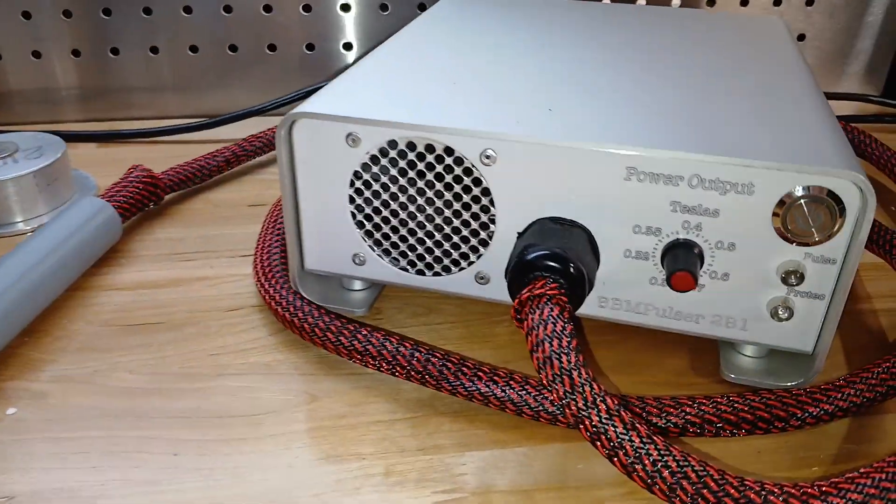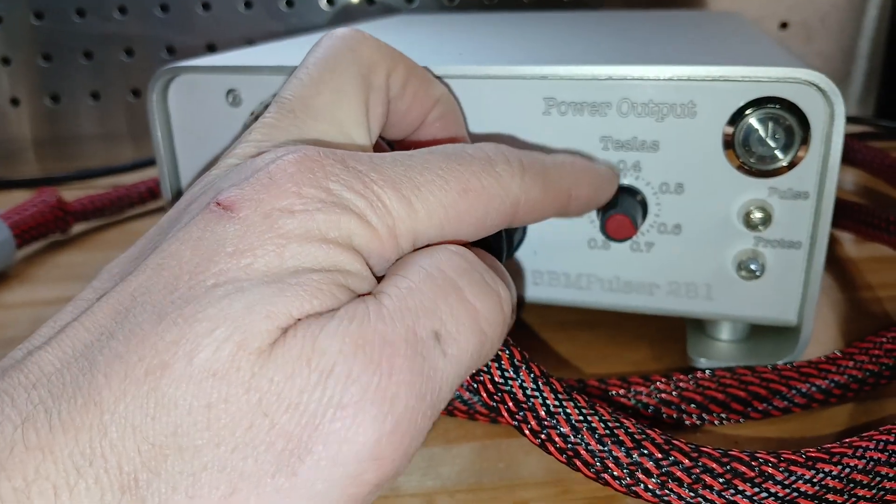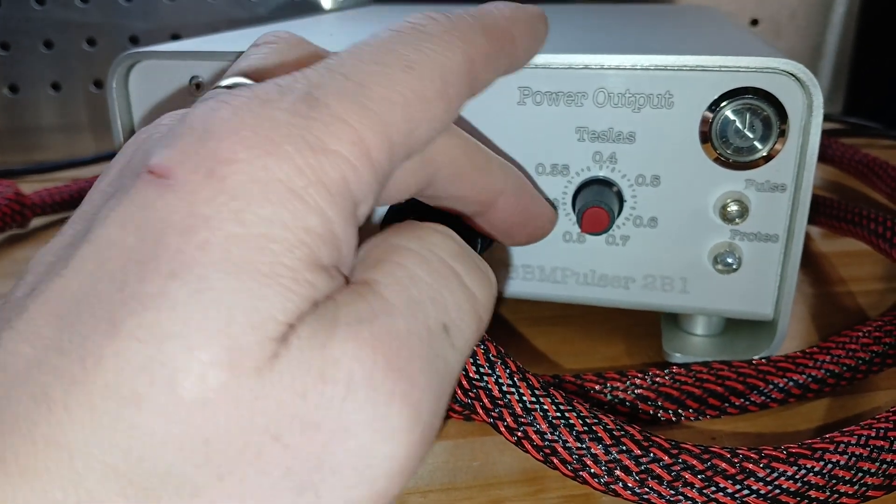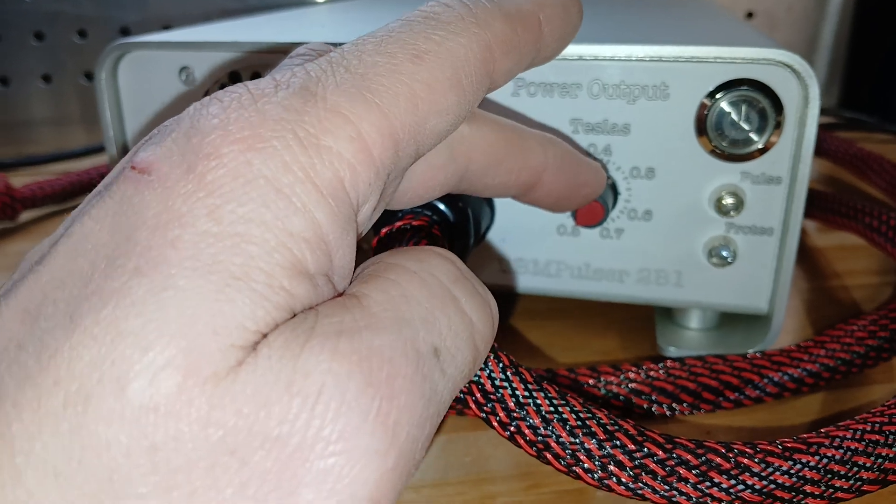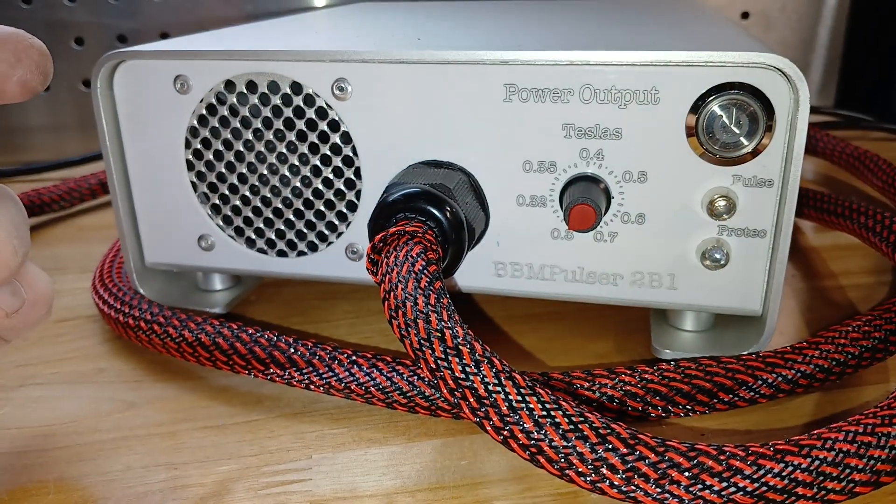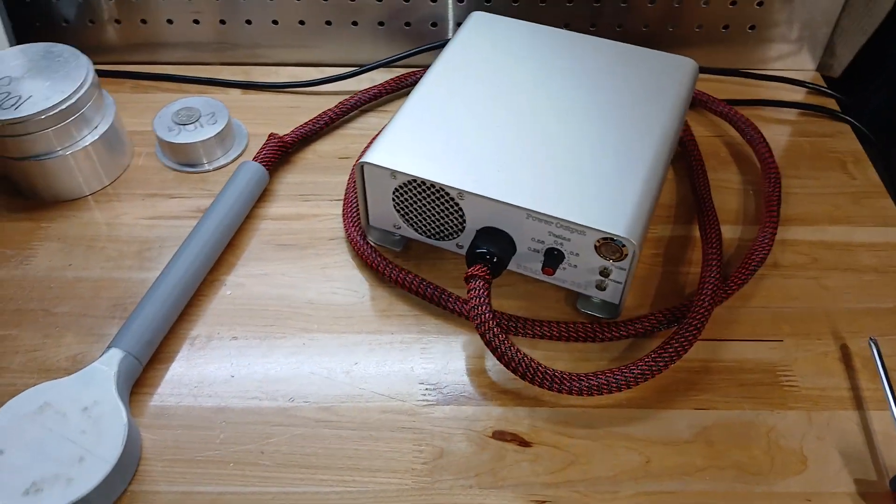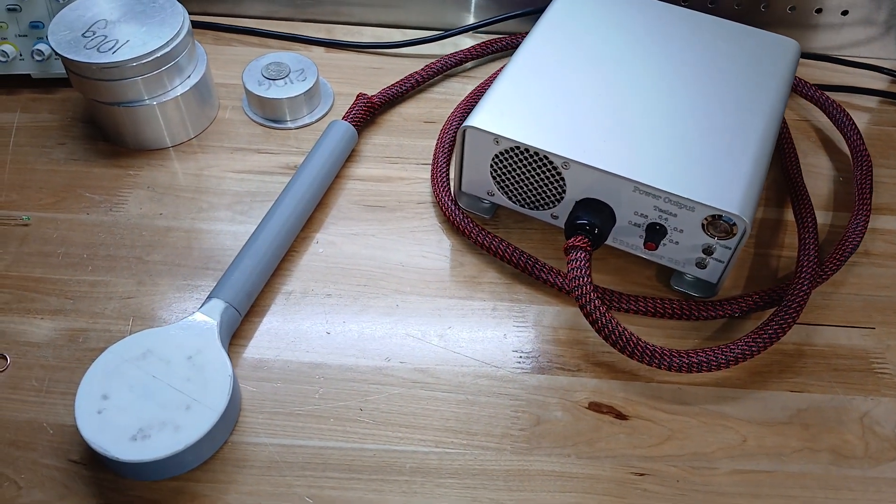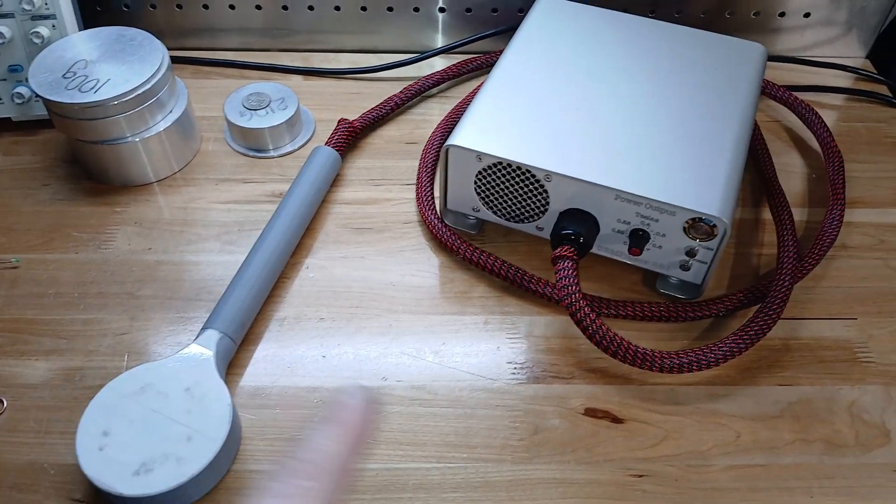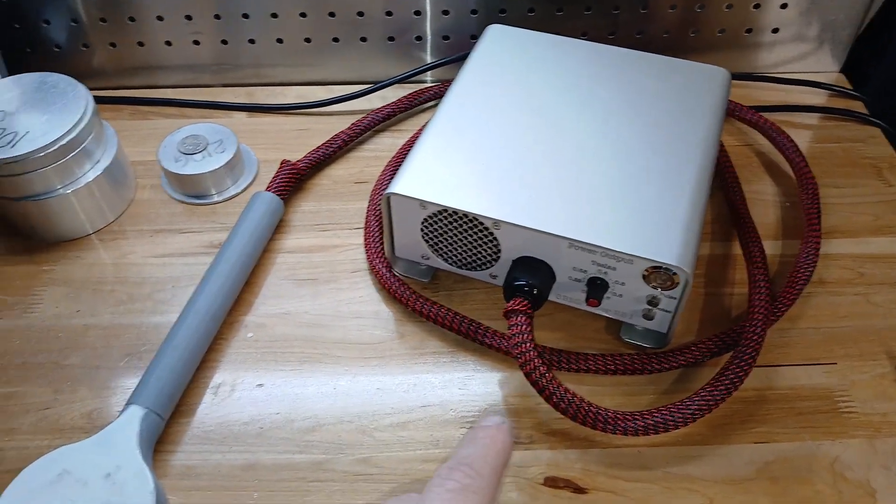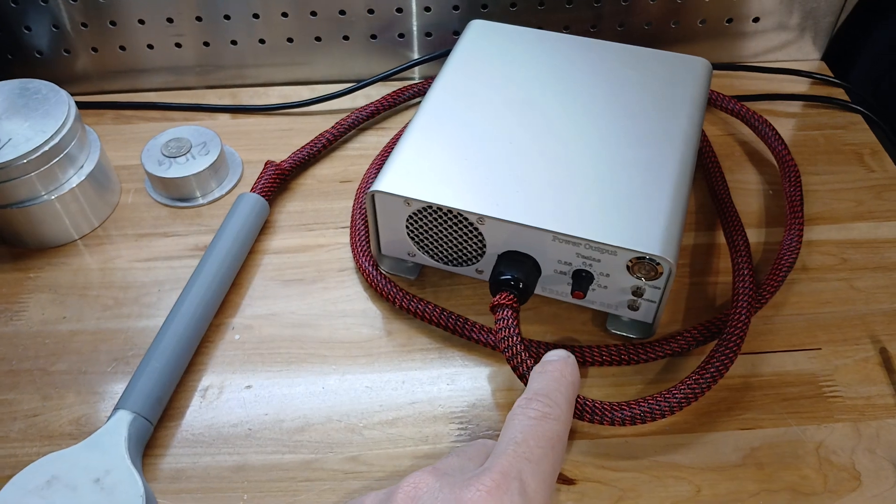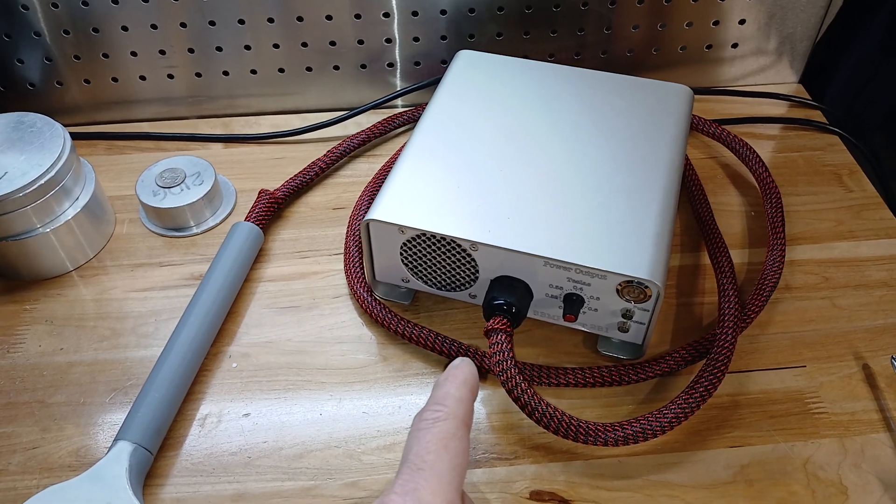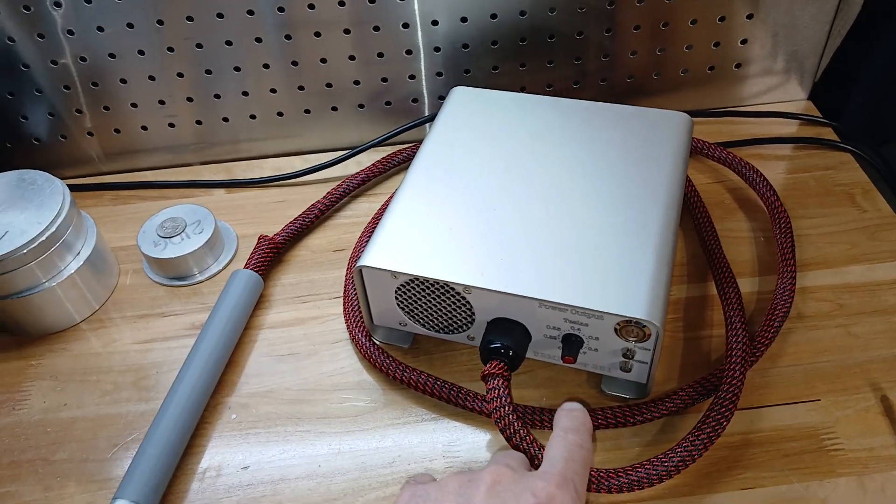So this is a 0.7 tesla PEMF with adjustment down to 0.3 tesla, and I was able to get it to spark even on 0.3 tesla, it sparks a little bit but not as much as on higher intensity. You can get more information about this model down below this video, I'll post a link to my website. This is the slowest one, and I have one which pulsates on highest almost four times a second at 3.75 hertz. On lowest it pulsates 17 times. This one on lowest pulsates like four times and on highest pulsates like once a second.